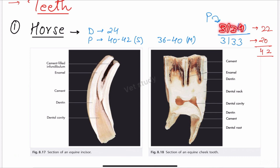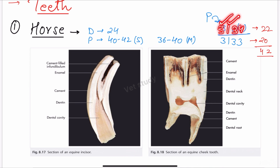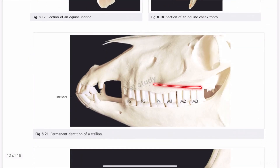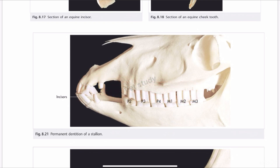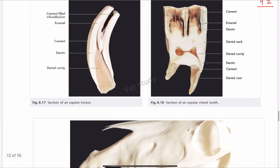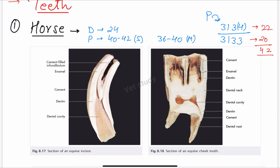What do we mean by 3134? This means three incisors, one canine, three premolars, and four molars. This is half of the upper jaw. To get the total number of teeth in the upper jaw, you have to double this number, which comes to 22. So 22 teeth are present in the upper jaw in case of equines, mainly in the stallion.